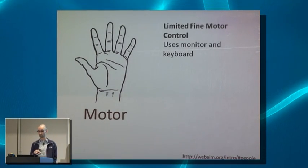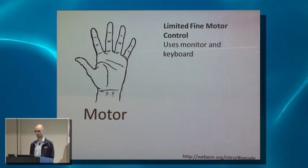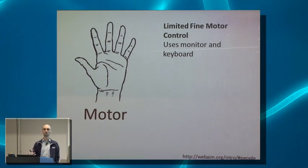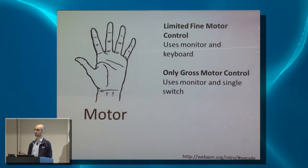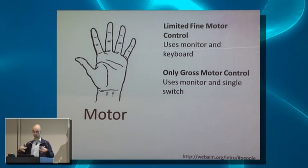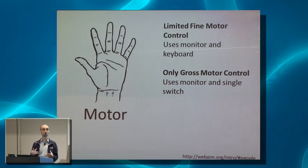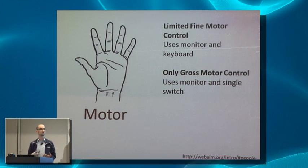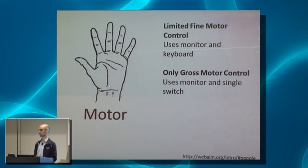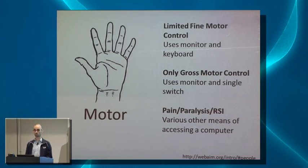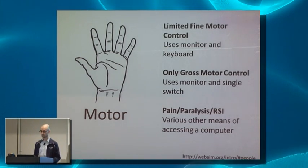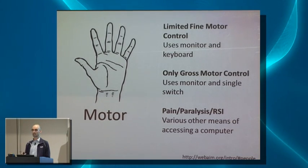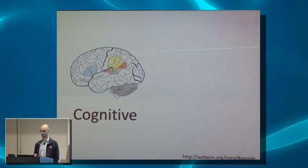There's a whole category of motor issues. Some people have limited fine motor control, making a mouse very difficult to use — they may use just a keyboard instead. Others have only gross motor control and might use a single switch, which is just one big button that controls an entire computer. Then there are people with pain, paralysis, or repetitive stress injuries who need other means to adapt.